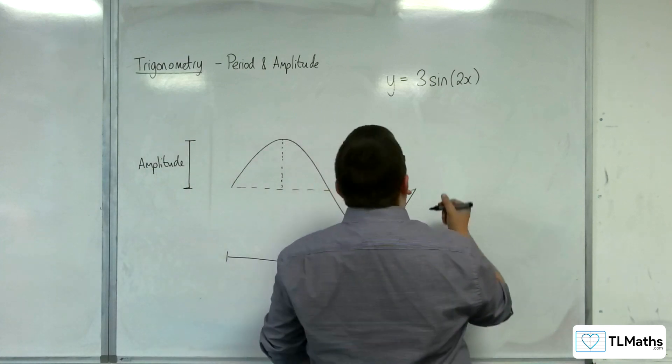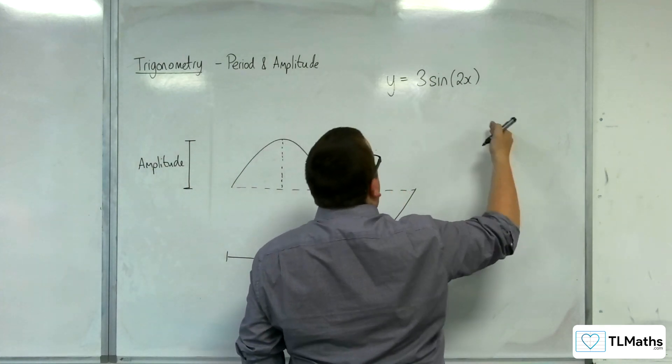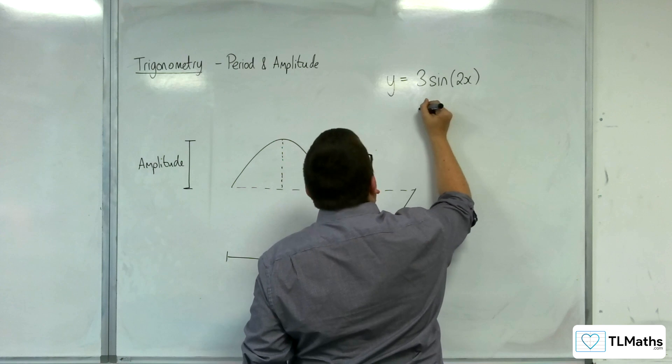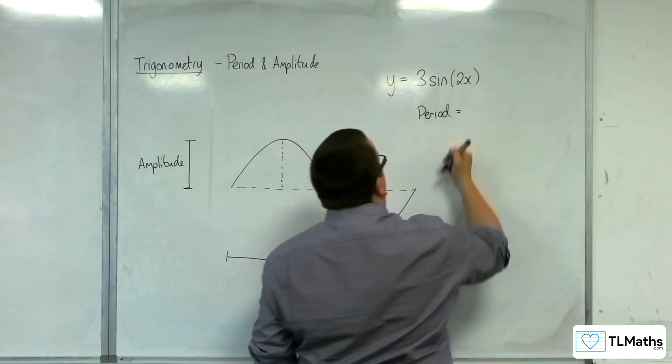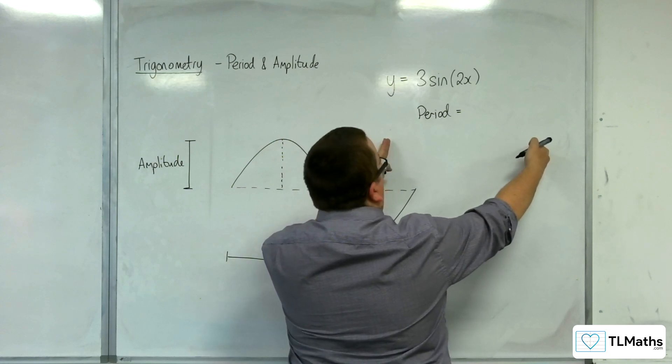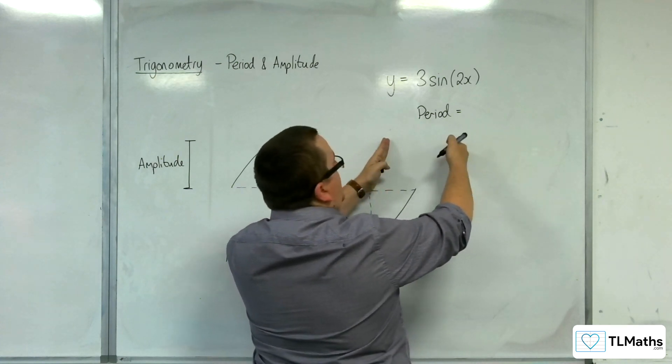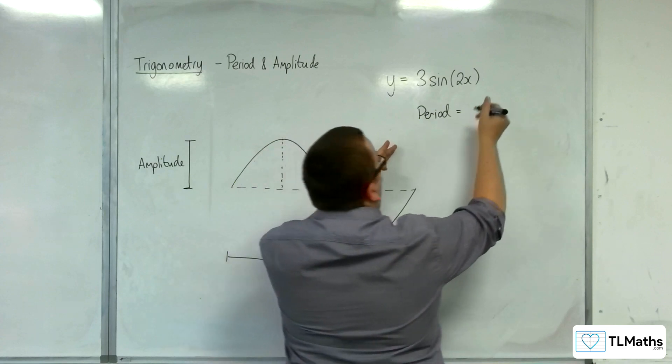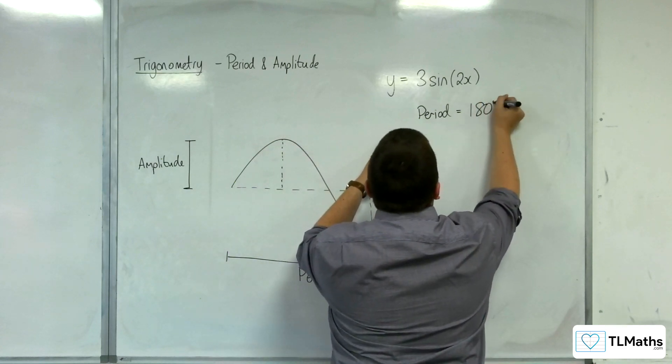If you were looking at this in degrees, then its period would be, from the 360, because it's been stretched back to a half, parallel to the x-axis, would now have a period of half as much. And so we'd be looking at 180 degrees.